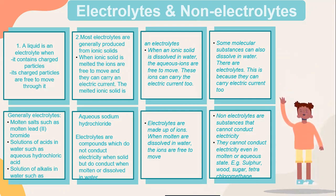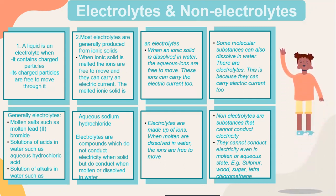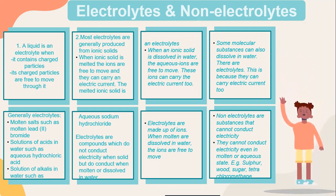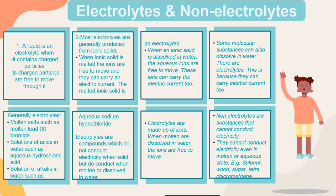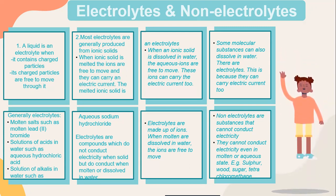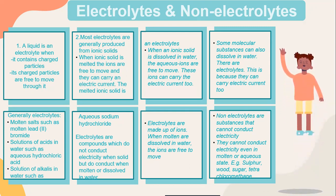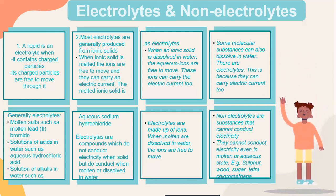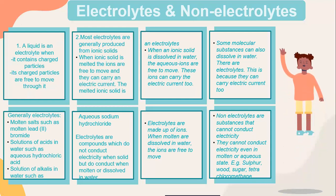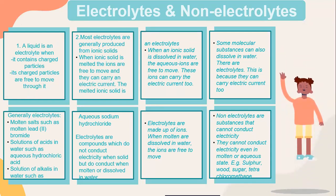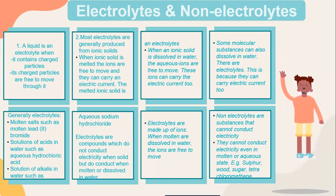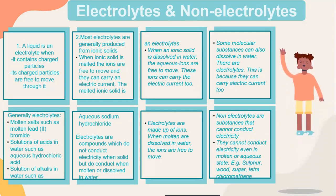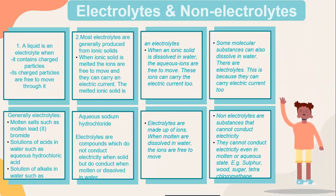When an ionic solid is dissolved in water, the aqueous ions are free to move, so this ionic solid can carry an electric current too. Some molecular substances can also dissolve in water and they are electrolytes, because they can carry electric current too. Generally electrolytes include a molten salt such as molten lead bromide, a solution of acid in water such as aqueous hydrochloric acid, or a solution of alkalis in water such as aqueous sodium hydroxide.